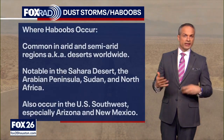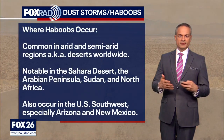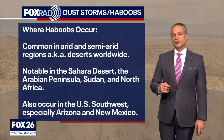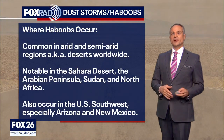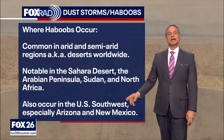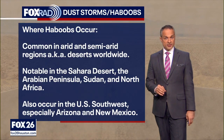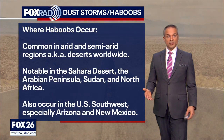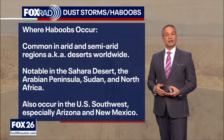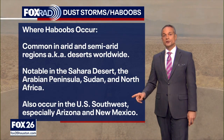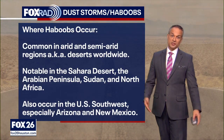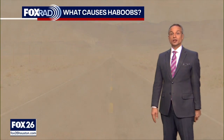Where do haboobs come from and where do they occur in the world? They're very common in arid and semi-arid regions, also known as deserts, worldwide. They're most notable in the Sahara Desert, also the Arabian Peninsula — like Saudi Arabia and surrounding areas — Sudan, and North Africa. But they also occur in the United States Southwest, especially in Arizona and New Mexico.